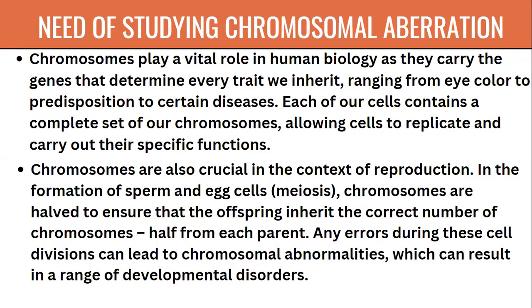Chromosomes are also crucial in reproduction and in the formation of sperm and egg cells. They must ensure that offspring inherit the correct number of chromosomes from each parent. Any errors during cell division can lead to chromosomal abnormalities, resulting in a range of developmental disorders.